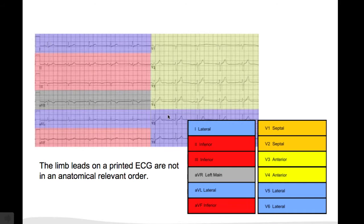Lead 1, AVL, V5, V6 are the lateral leads. Lead 2, 3, AVF are the inferior leads, and the others are the anterior leads.